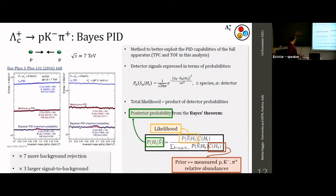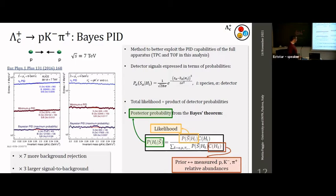Another important piece of information used to reconstruct Lambda_c in the pKπ channel is particle identification (PID). We adopted a Bayesian technique: we take detector signals and express them as probabilities — given a species h_i, we calculate the probability for this particle to produce a signal in detector α (such as TPC or TOF). A total likelihood is expressed as the product of the individual detector likelihoods.